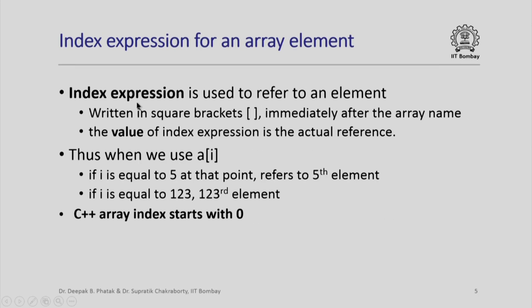We further look at the notion of index expression, which is used to refer to an element written in square brackets immediately after the array name. Wherever we want to refer to an element, the value of index expression is actually the reference to the element. For example, when we use a[i], if i is equal to 5 at that point, a[i] refers to the fifth element.